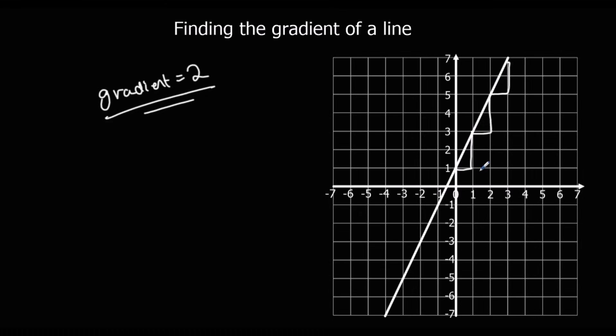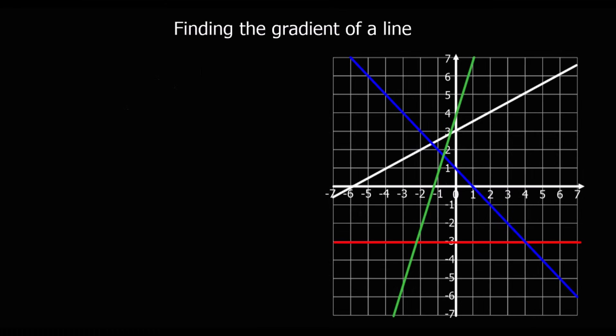So for every 1 we go across, we go up 2 — the gradient is 2. Here's a whole host of different lines. Let's look at the gradient of each of them.